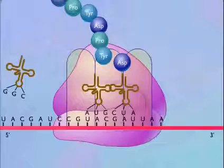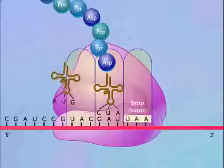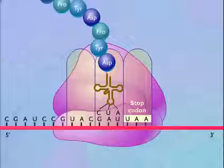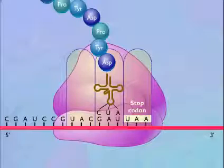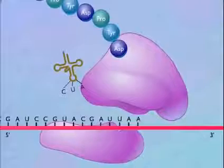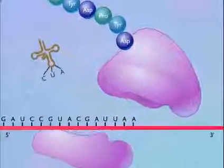Elongation of the polypeptide is terminated when a stop codon moves into the A-site. A stop codon does not specify an amino acid and does not have a corresponding transfer RNA. The ribosome dissociates into the 30S and 50S subunits, and the messenger RNA and protein are released.